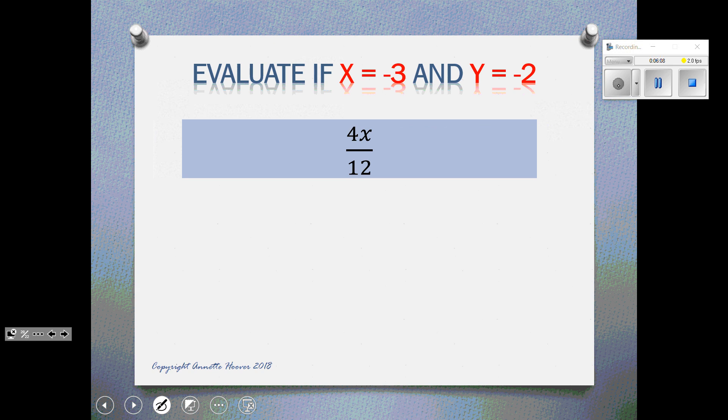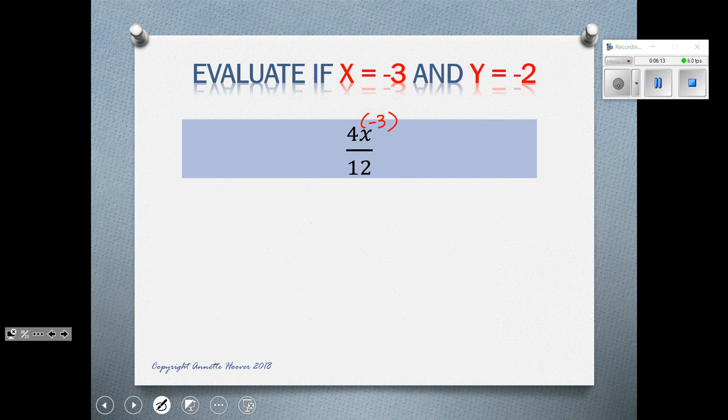4x divided by 12. And x is negative 3, so we plug in negative 3. When I multiply 4 times negative 3, I get negative 12. 12 divided by 12, and we divide with one negative, the answer is negative, so it would be negative 1.